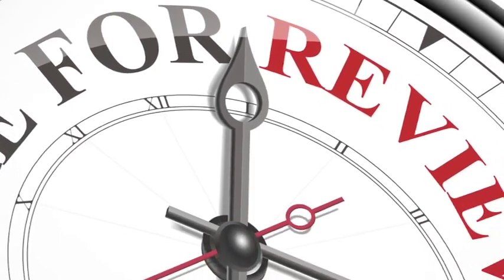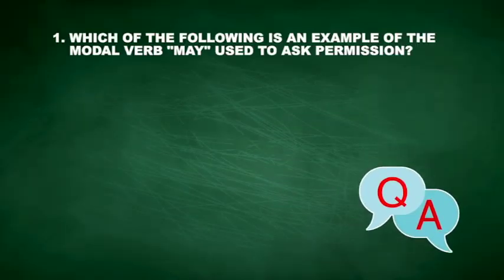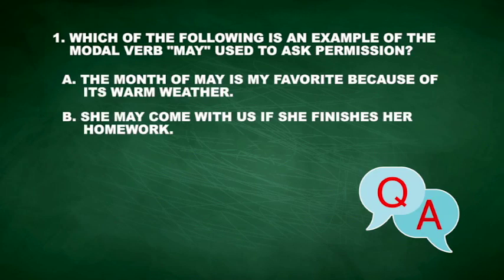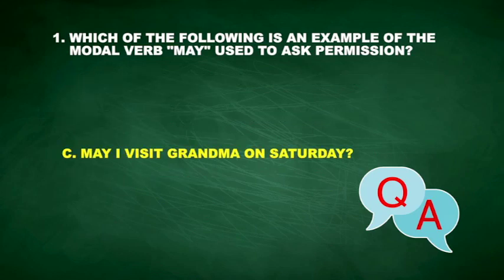Let's review what we have just learned about the modal verbs. Question 1: Which of the following is an example of the modal verb 'may' used to ask permission? A. 'The month of May is my favorite because of its warm weather.' B. 'She may come with us if she finishes her homework.' C. 'May I visit grandma on Saturday?' D. None of the above. The correct answer is C. 'May I visit grandma on Saturday' is an example of a permission question.